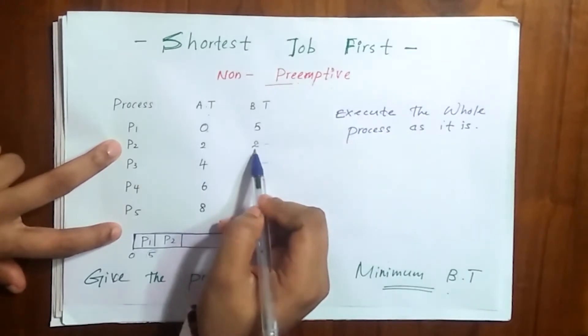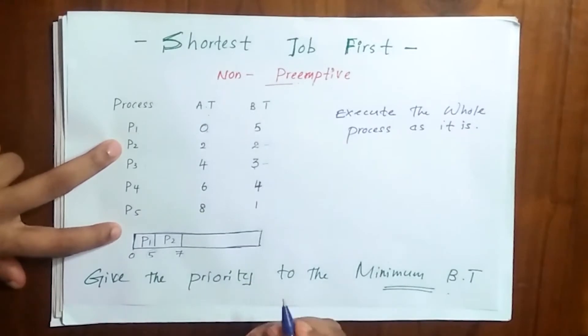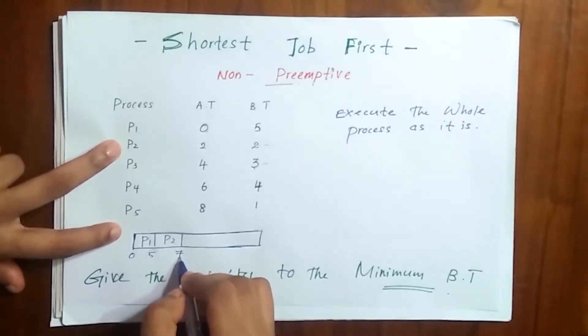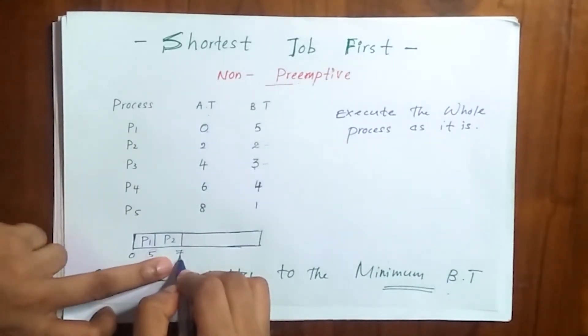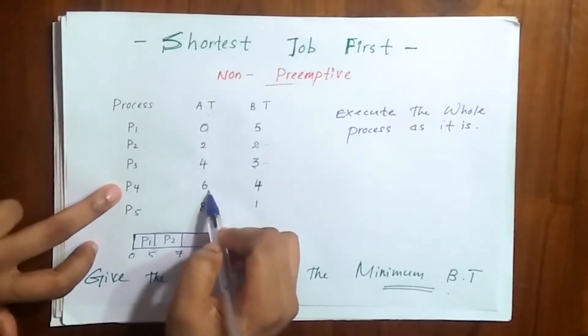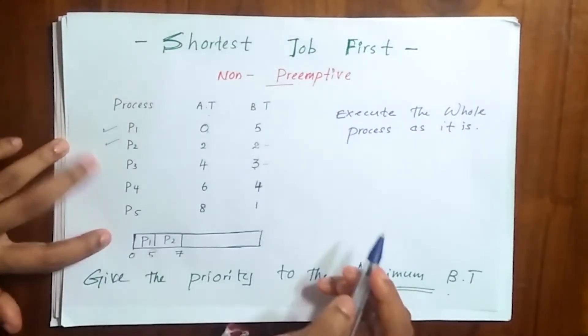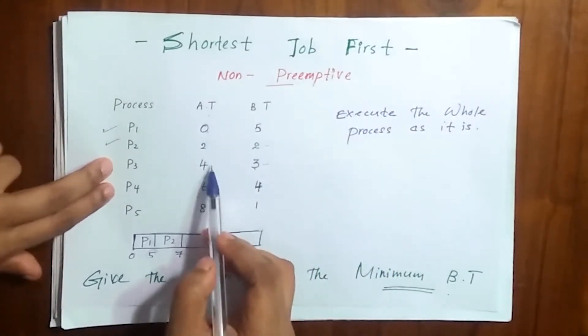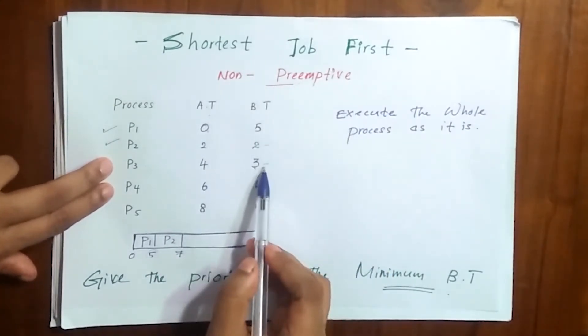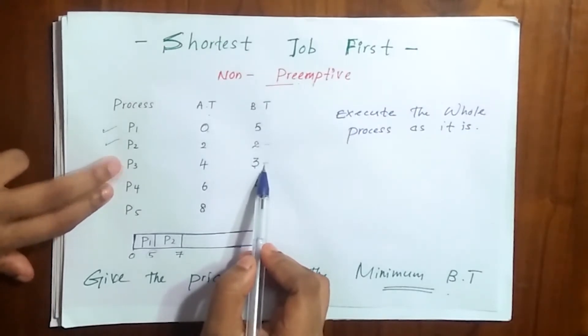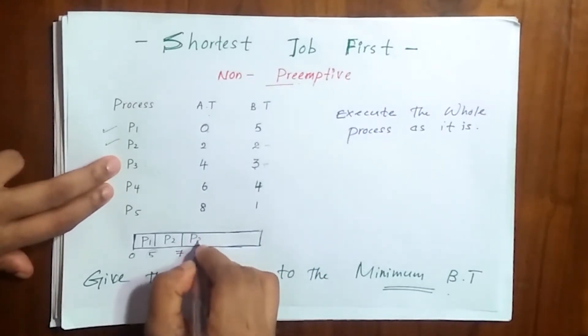5 plus 2 and the burst time is 2, so 5 plus 2 is 7. In these 7 seconds P4 also arrives. Now we are done with P1 and P2. We have P3 and P4. From these two, which has the minimum burst time? Yes, it is P3, so we write P3 here.